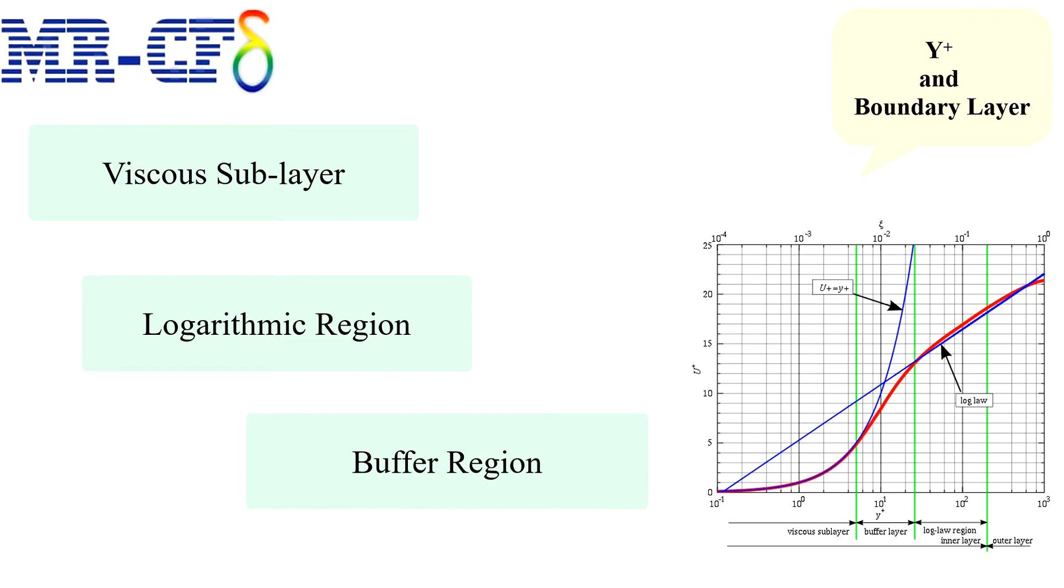Where different relations are observed between the average velocity and this non-dimensional distance Y plus. Y plus helps somewhat identify where these regions lie in the flow domain. It also helps in modeling the wall layer.